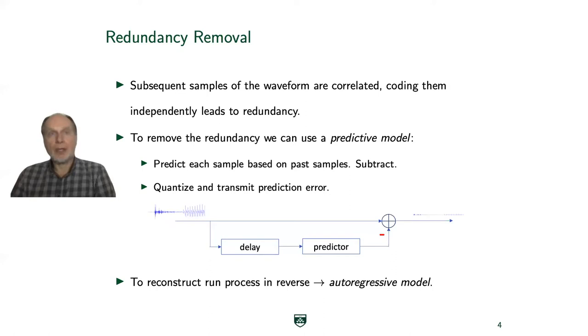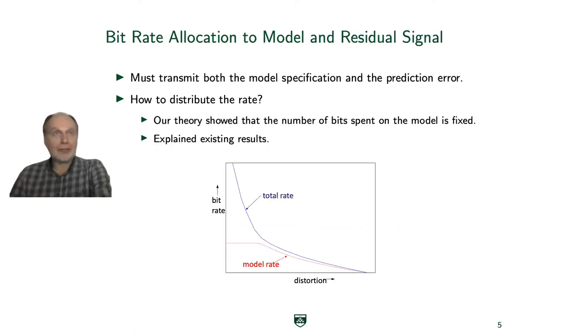When you look at this picture you see that we now have two things to transmit: the prediction residual and information about what the predictor itself is. So the question comes up how many bits do you spend on one and on the other. We did some theoretical work on that and showed that the rate you spend on the model is independent of the overall rate.